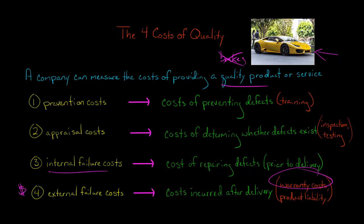External failure would include warranty costs. So the car goes out to somebody, there's a warranty that for five years there won't be any problems with the engine, transmission, and so forth — but the engine blows within three weeks. The person brings it back and it turns out we just sold them a car with a defective engine, so now we're going to incur some warranty costs.